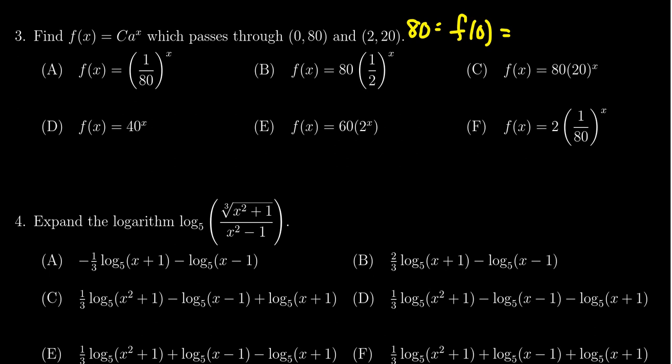But we also know that c times a to the 0 - even though we don't know what a is yet, we do know that a to the 0 is equal to 1. So this is just going to give us the value c. So for this exponential function, the initial value, 80, is the coefficient c. So now we know that f of x has the form 80 times a to the x.